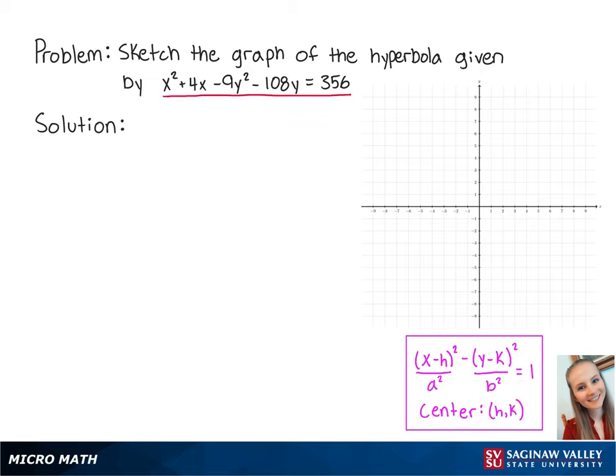Here we have the standard form of a hyperbola. First, we need to get our equation into standard form by completing the square. To do this, we need to get the coefficients of x squared and y squared equal to 1. So we're going to factor out a negative 9 from these two terms.